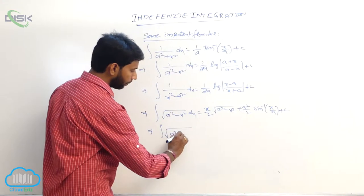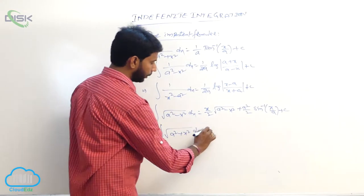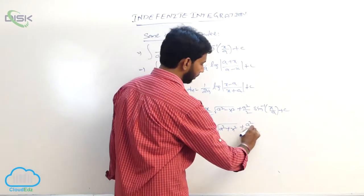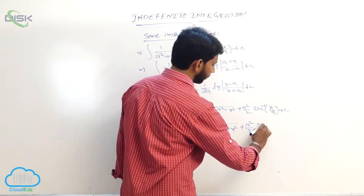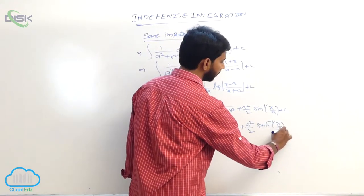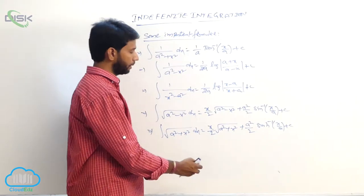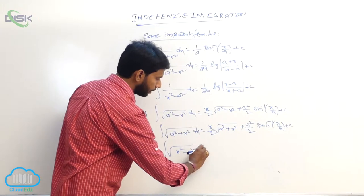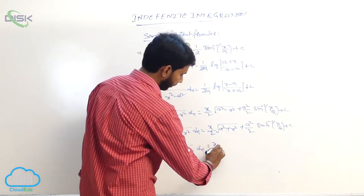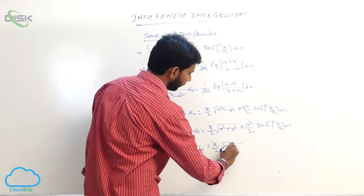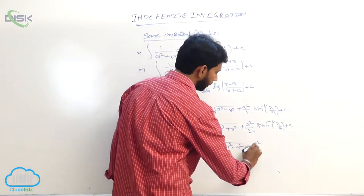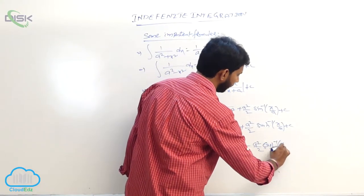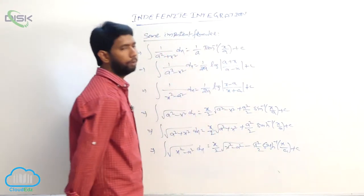Integral of 1 by root of a square plus x square dx is equal to x by 2 into root of a square plus x square plus a square by 2 into sinh inverse of x by a plus some constant. Integral of root of x square minus a square dx is equal to x by 2 into root of x square minus a square minus a square by 2 into cosh inverse of x by a plus some constant. Those are very very important formulas.